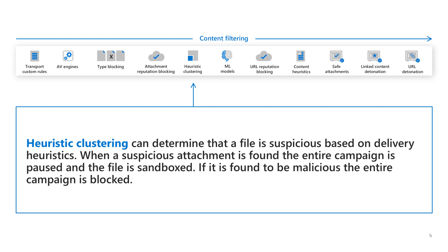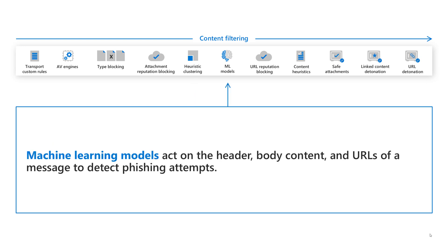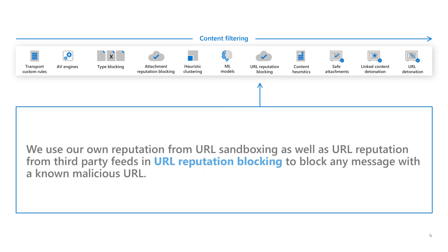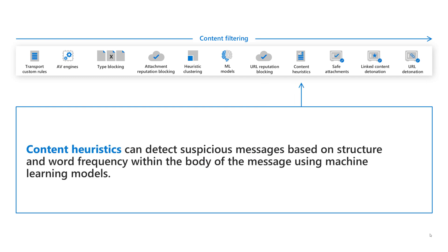Heuristic clustering can determine that a file is suspicious based on delivery heuristics. When a suspicious attachment is found, the entire campaign is paused and the file is sandboxed. If it is found to be malicious, the entire campaign is blocked. Machine learning models act on the header, body content, and URLs of a message to detect phishing attempts. URL reputation blocking is used from URL sandboxing as well as third-party feeds to block any message with a malicious URL. Content heuristics can detect suspicious messages based on structure and word frequency within the body of the message using machine learning models.